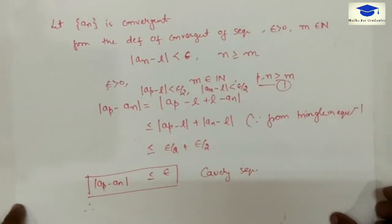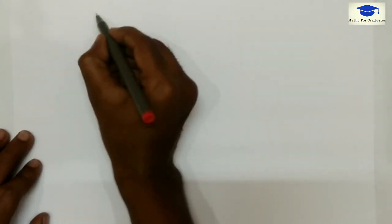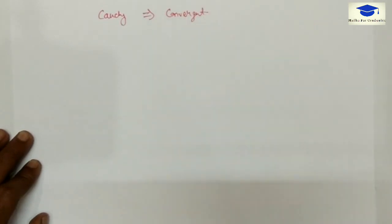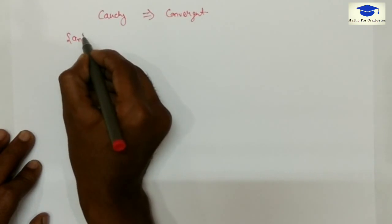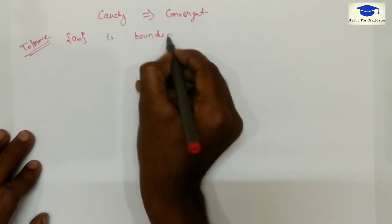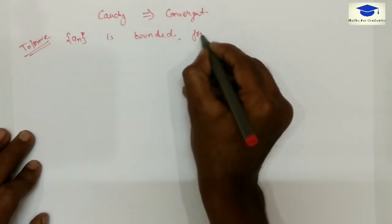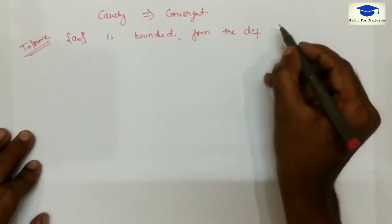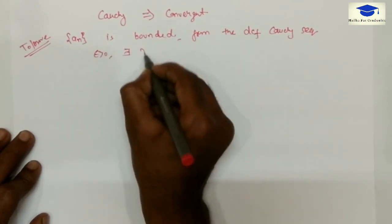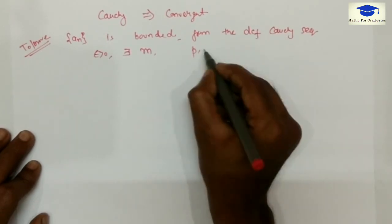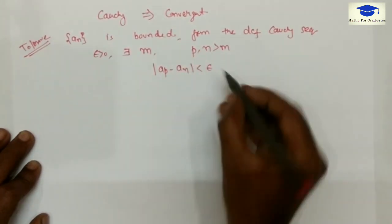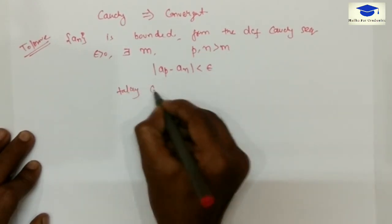Now we will prove in the other direction. We will assume the sequence is Cauchy and then show that it is convergent. First we will prove the sequence is bounded. From the definition of a Cauchy sequence, for a positive epsilon there exists m such that for p and n greater than m, the distance between a_p and a_n is less than epsilon. For our convenience, take epsilon equal to 1.